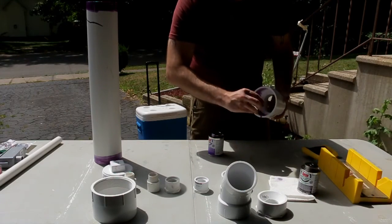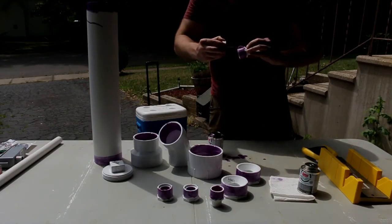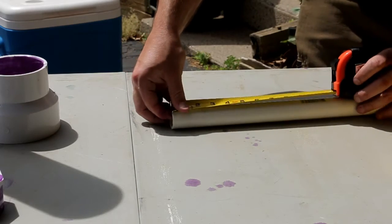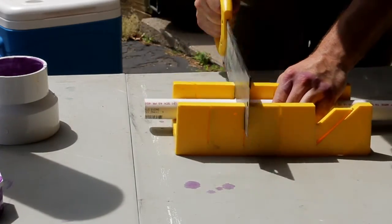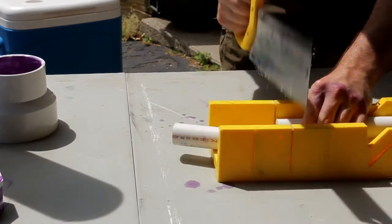So grab your purple primer and put a solid coat on anywhere where there will be a PVC connection. After you prime everything, grab your 1 inch PVC pipe and cut it into 6 inch lengths.